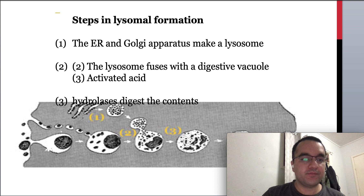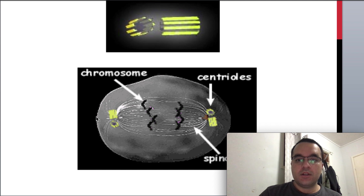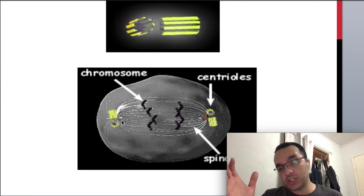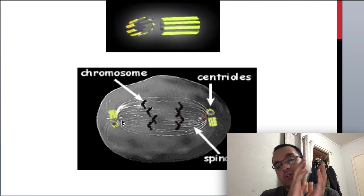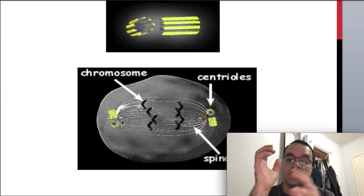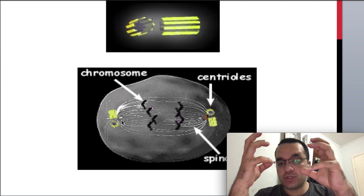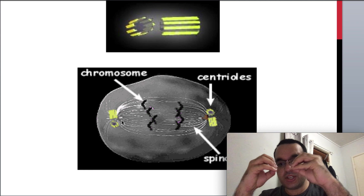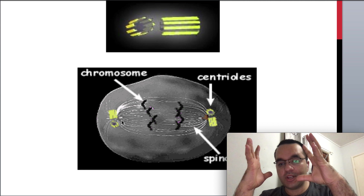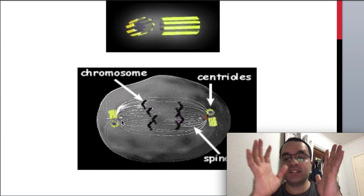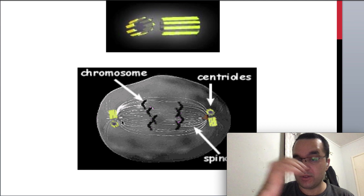Centrioles are organelles responsible for cell reproduction and division. Centrioles are organelles in a cell that help the cell divide into two and ensure that both dividing cells get an equal number of genetic material. In simple terms, centrioles are cell organelles that help the cell during its division.